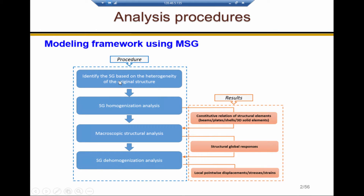The first step is to identify the SG based on the heterogeneity of the original structure. SG is the abbreviation of structured genome. Structured genome is the smallest mathematical building block of the original structure.